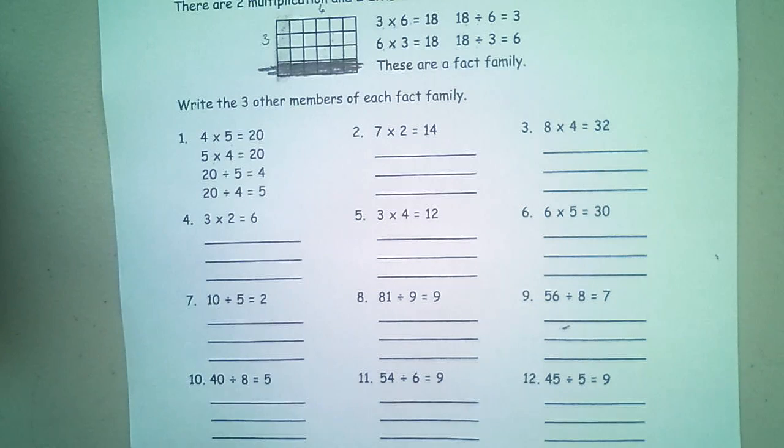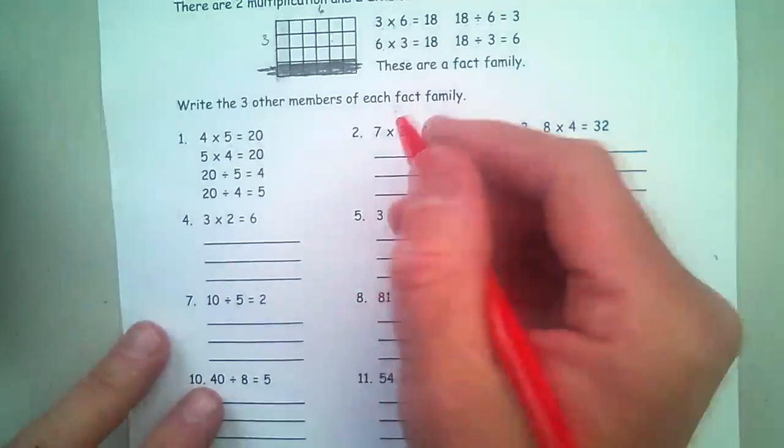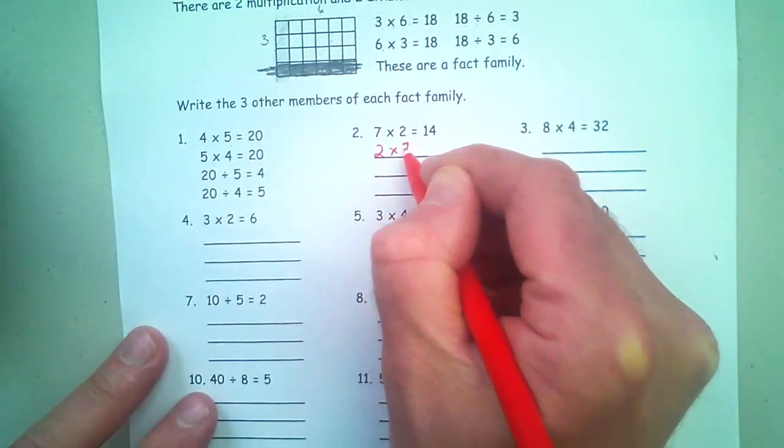Because if you just say you don't know your 6 times tables, but you know that 5 times 6 is 30, well, all of a sudden now you know that 6 times 5 is 30. You've already eliminated one of your 6 times tables that you might have been struggling with. And so you can just go ahead and fill these in.